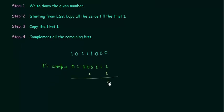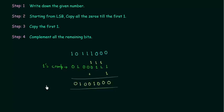1 plus 1 is 0 with carry 1. 1 plus 1 is 0 again with carry 1. 1 plus 1 is 0 with carry 1. 1 plus 0 is 1, and then we have 0 0 1 0. So this is the 2's complement of this binary number.